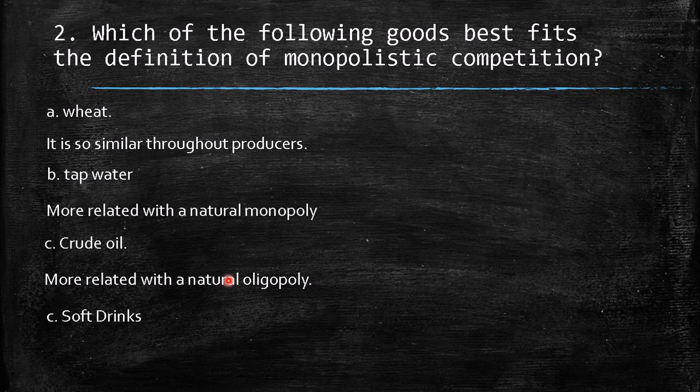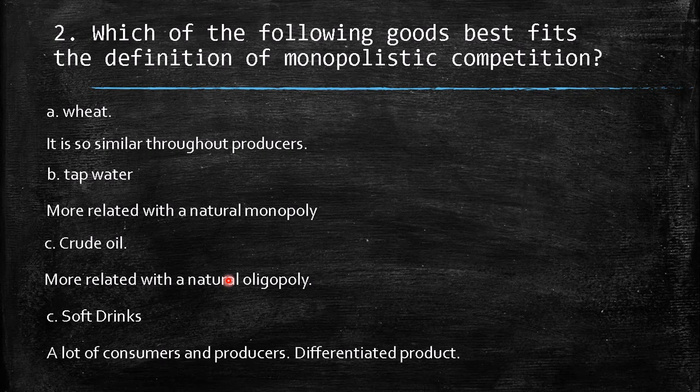Soft drinks are definitely the best fit for monopolistic competition. First, there are many consumers; second, many producers; and third, the products are differentiated — drinking a Coke versus a Pepsi is a different experience. The taste, flavor, and overall product are different, making it a differentiated product. So the answer is soft drinks.